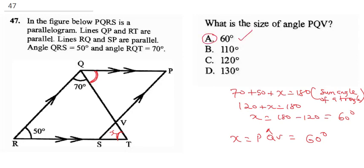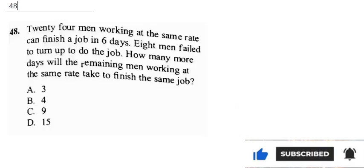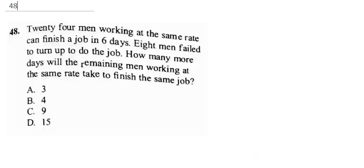Question 48: 24 men working at the same rate can finish a job in 6 days. Eight men failed to turn up to do the job. How many more days will the remaining men working at the same rate take to finish the same job?